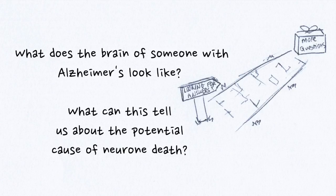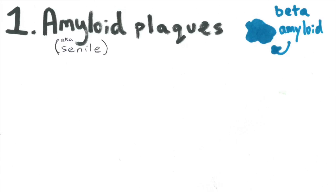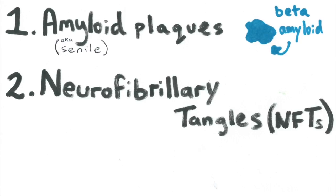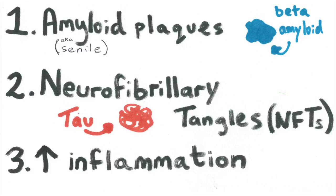What does the brain of someone with Alzheimer's look like, and what can this tell us about the potential cause of neuron death? If we were to look into the brain of someone with Alzheimer's, there are a few characteristic things we would spot, other than shrinkage of certain brain areas. The first are amyloid plaques — also known as senile plaques — which are basically lumps of a substance called beta amyloid. Second are neurofibrillary tangles, or NFTs for short, which are lumps of a different substance called tau. And thirdly, an increased level of inflammation — part of your body's immune system's response to getting rid of substances it doesn't want there. These three things can act as sort of calling cards of Alzheimer's.